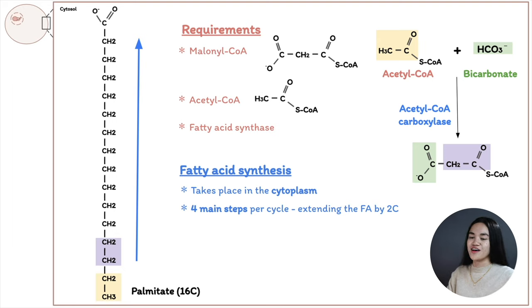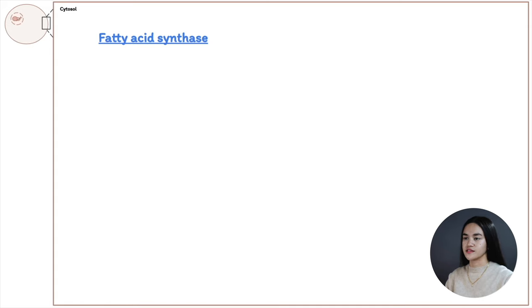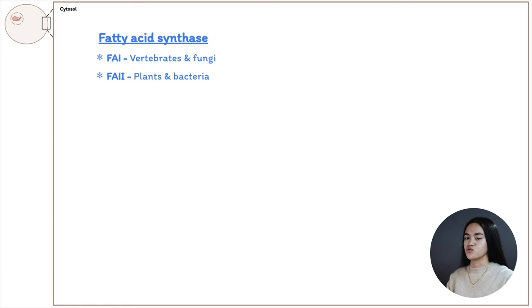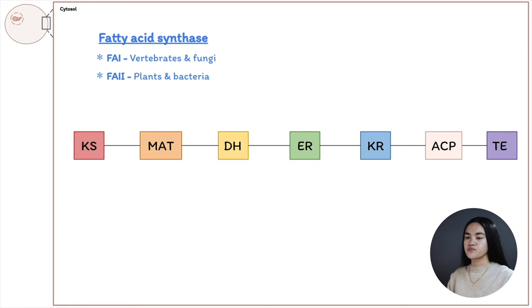The enzyme catalyzing fatty acid synthesis is fatty acid synthase, and it works in a four-step sequence per cycle, extending the fatty acid by two carbon atoms each cycle. There are two types: fatty acid synthase 1, found in vertebrates and fungi, and fatty acid synthase 2, found in plants and bacteria. We'll focus on fatty acid synthase 1, which is a polypeptide with linked enzymes.